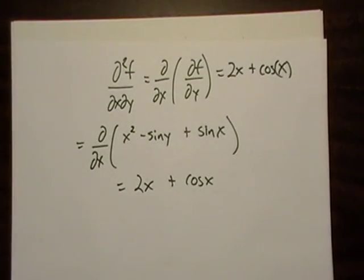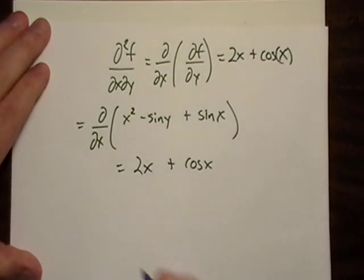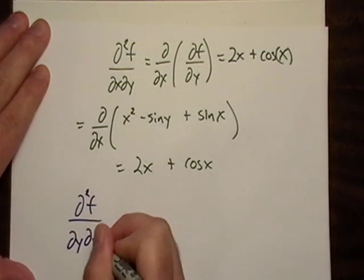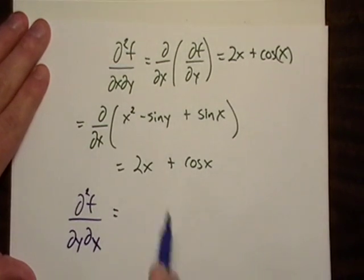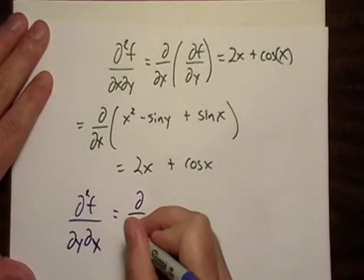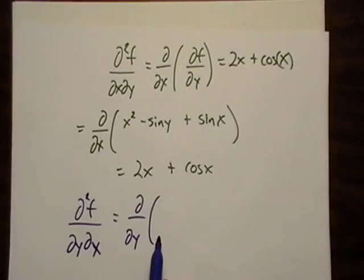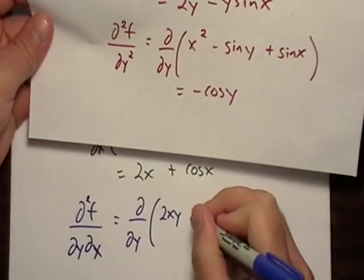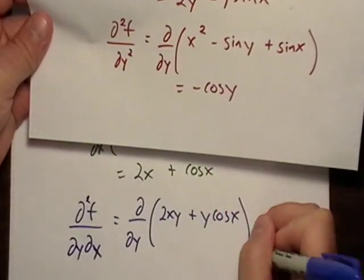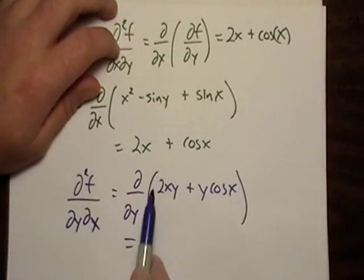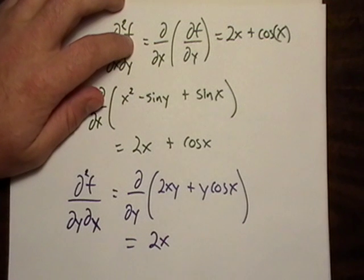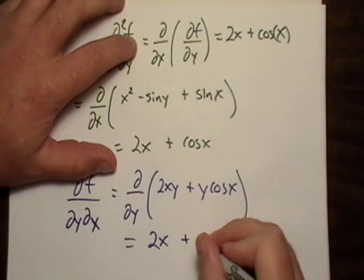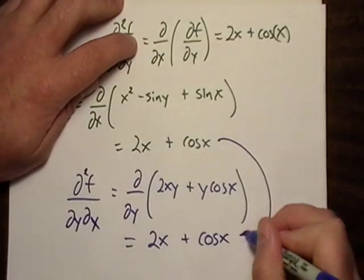Do a little pen swap and now let's do the mixed partial. Now, if I did everything right, I should get this exact same answer. So I need partial of y against the original partial x, which is 2xy plus y cosine x. So with respect to y, I get 2x and with respect to y, cosine is just basically a coefficient. So yeah, everything works out. Notice how they were equal.